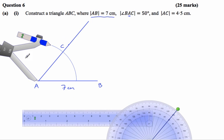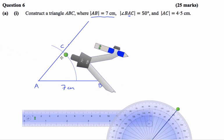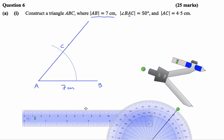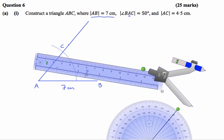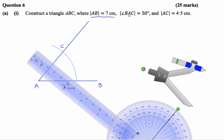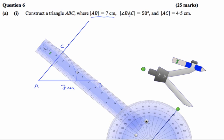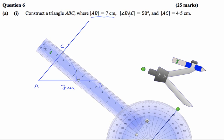Now all that's left to do is to join the point C to the point B. So I get my ruler and join the point C to B, being as accurate as you can.